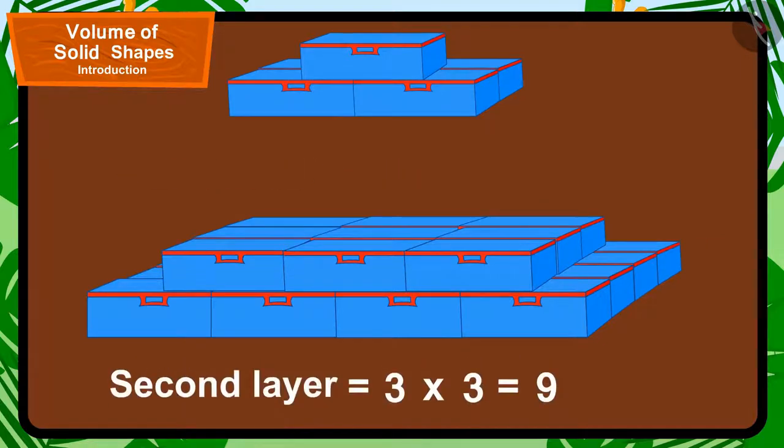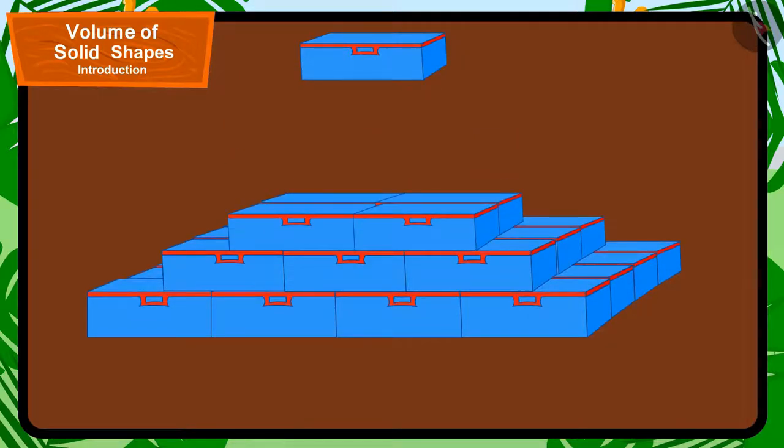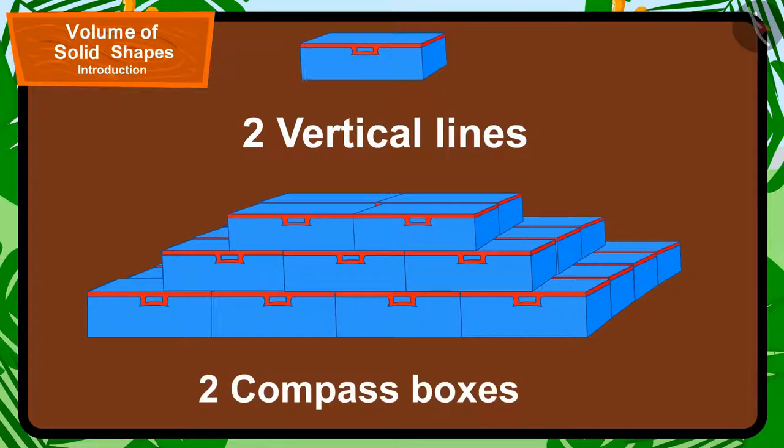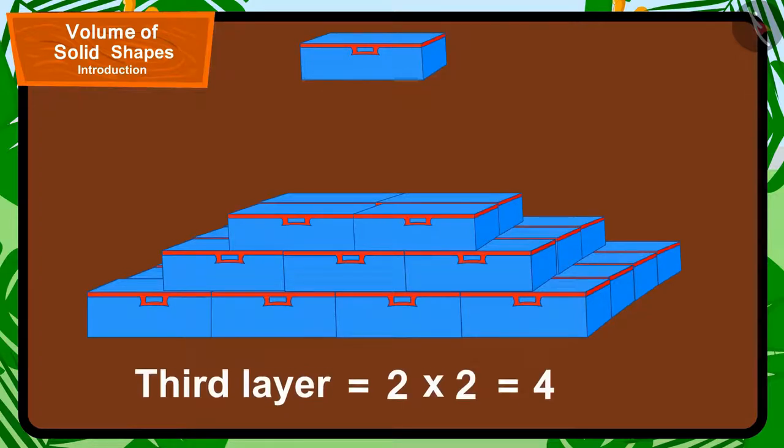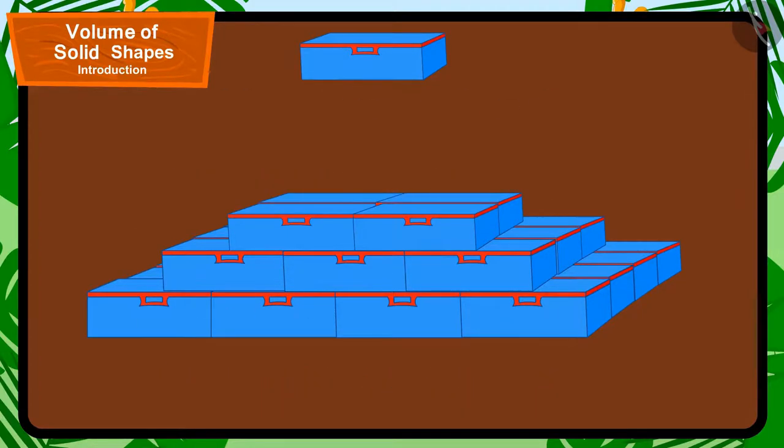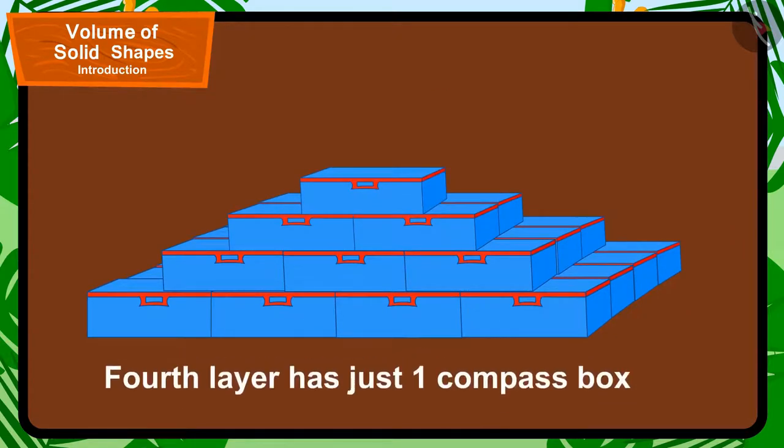This means the second layer has 3 times 3, that is 9 compass boxes. The third layer has 4 compass boxes. And finally, the fourth layer has just one compass box.